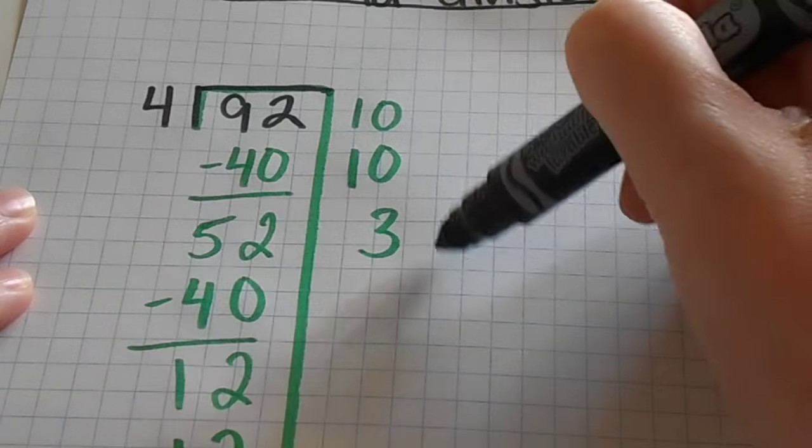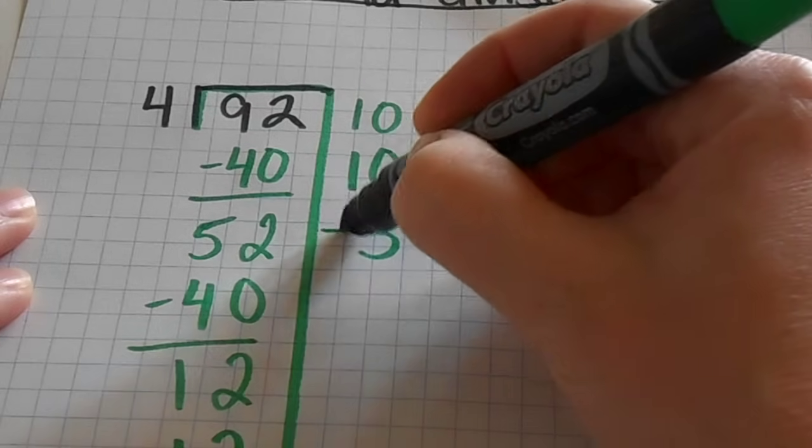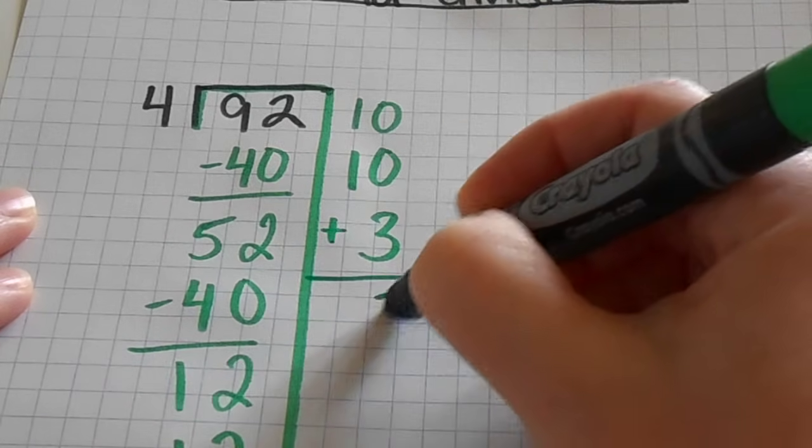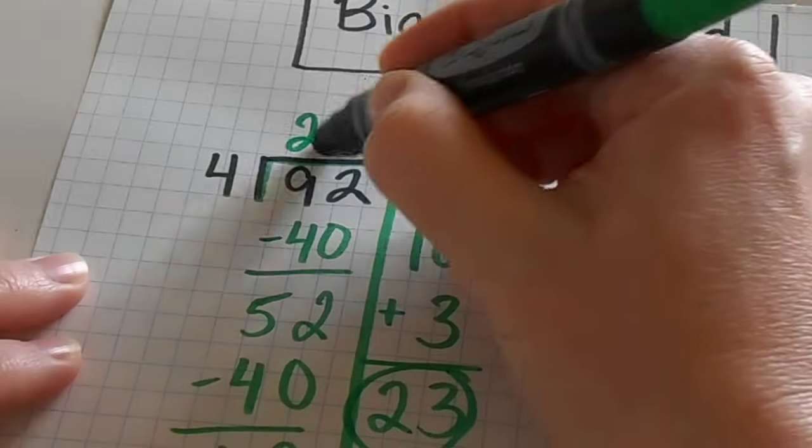So this, again, is where I'm keeping track of how many fours I took out of 92. I'm going to add those all up. And then my answer is 23. And you can write that up here.